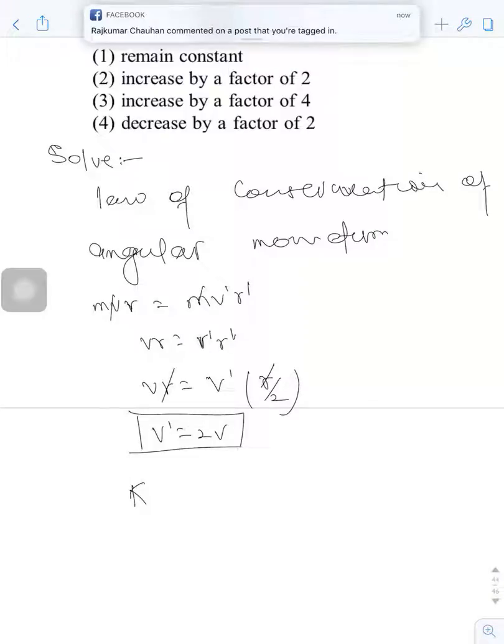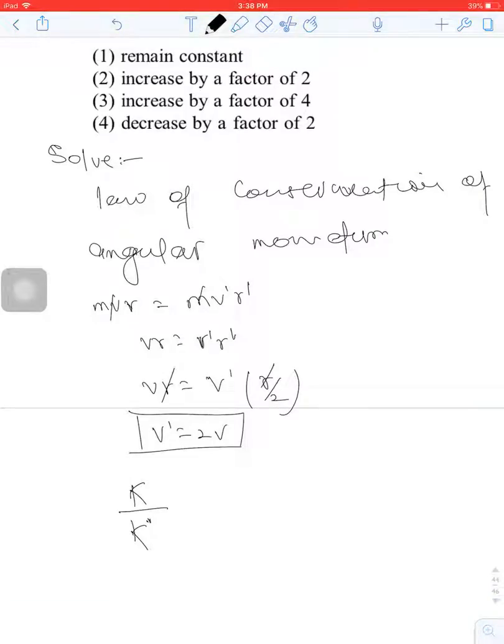So the kinetic energy ratio K/K' equals (1/2)m v² over (1/2)m v'². The 1/2 and m cancel out, giving us (v/v')².